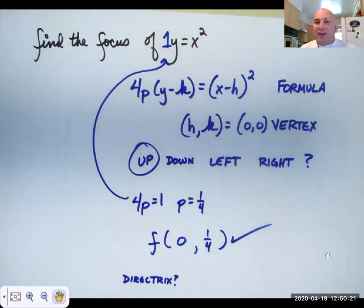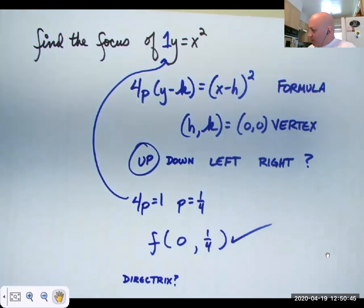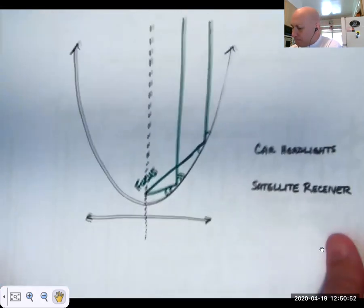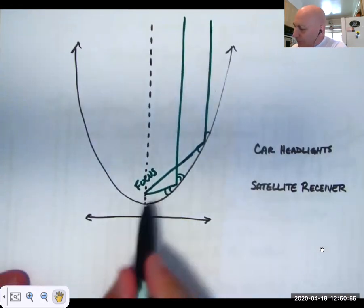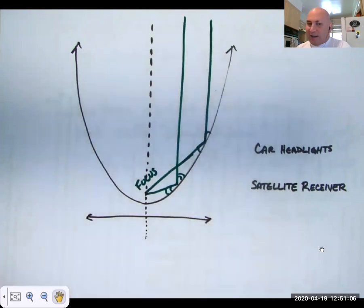Knowing that the focus is 0, one-fourth and the vertex is 0, 0 — here's 0, 0 and here's 0, one-fourth — the directrix must also be one-fourth of a unit below the vertex. So the directrix must be y equals negative one-fourth.